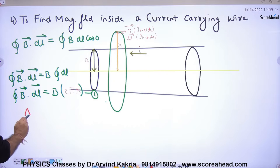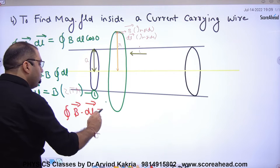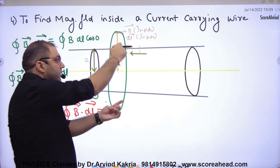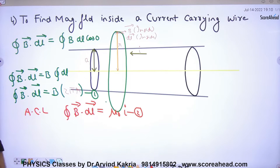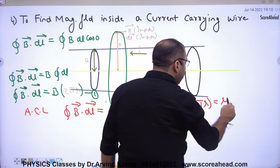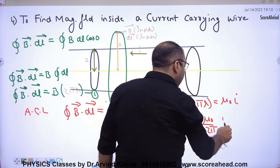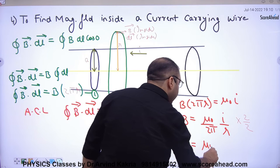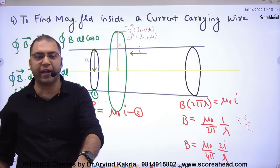According to Ampere's Circuital Law, ∮B·dl equals μ₀ times the current enclosed in the closed path. Equating equation 1 and equation 2: B × 2πr = μ₀ × I. Therefore, B = μ₀/2π × I/r, which can also be written as μ₀/4π × 2I/r. This is the result for an infinite wire.